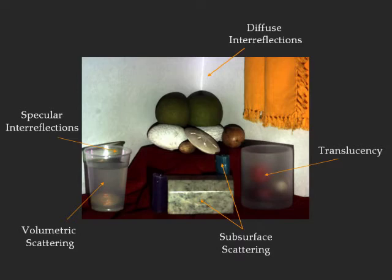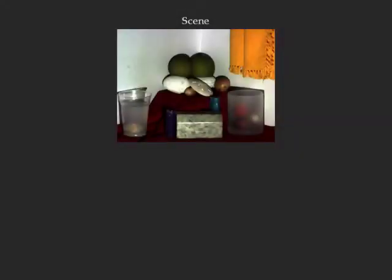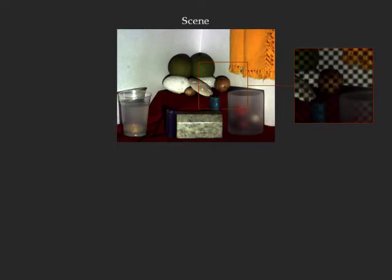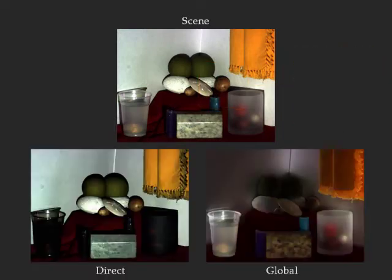We now show several methods that use a larger set of images to cope with the resolution limits of the source and the camera. The same scene is illuminated using a projector with 25 patterns that correspond to shifts of a single high-frequency checkerboard pattern. From the captured images, the direct and global components are computed.